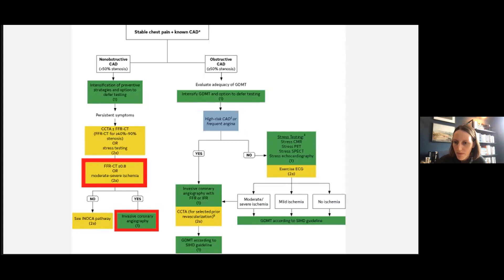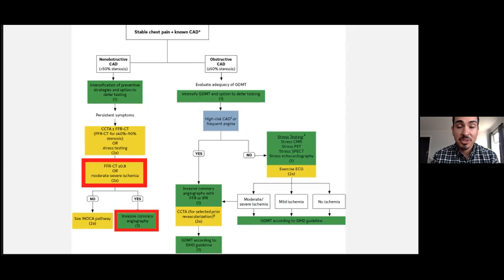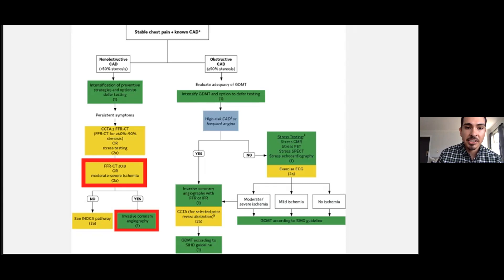Hillary wanted to clarify: does this mean our first line in outpatient stable chest pain is CCTA instead of functional stress testing? Yes — that is the biggest change in these guidelines. In Europe, they have been doing that for quite some time; we had not been doing that in the US. The paradigm shift is relying more on anatomical testing versus functional testing, especially because several studies show it is not inferior and gives us more information to further risk stratify patients — particularly those in the intermediate risk category.